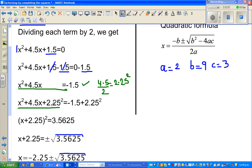If I add 2.25² on the left-hand side, I have to do the same on the right-hand side. This becomes a perfect square: (x + 2.25)² = 3.5625.